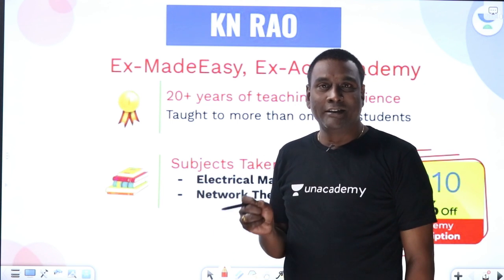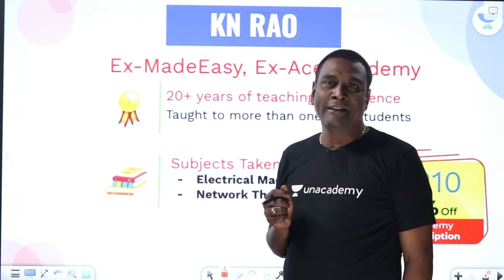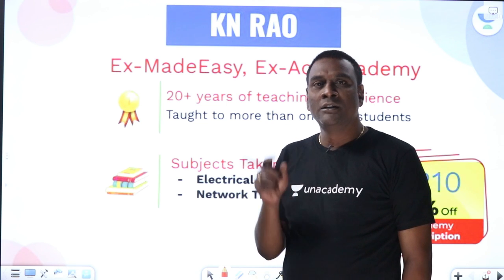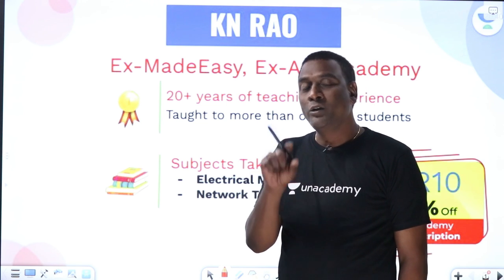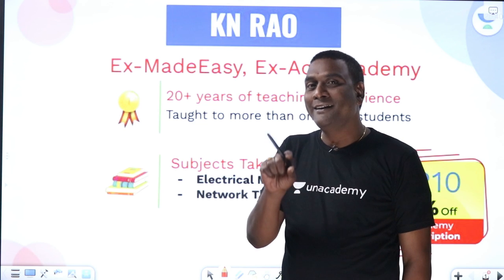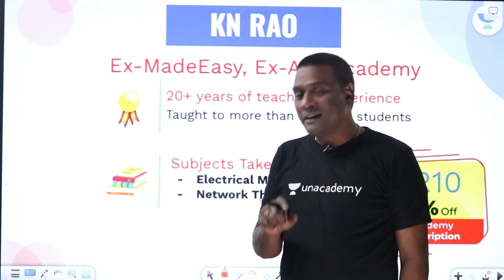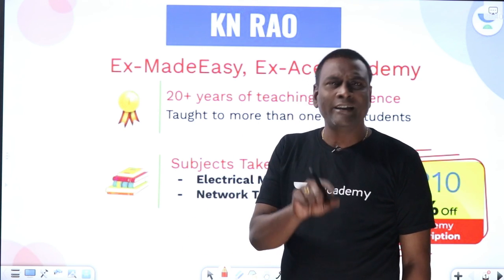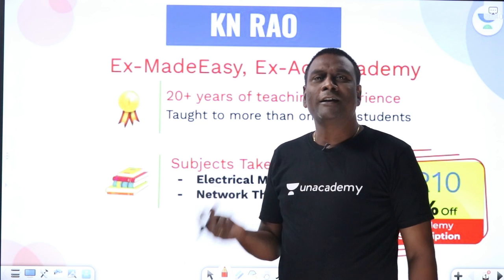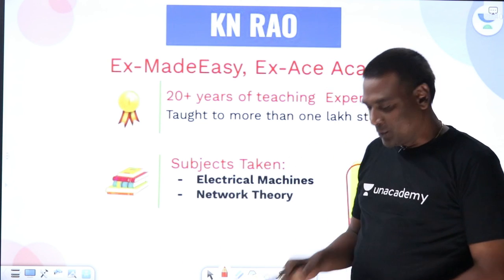The third point is: while killing or deactivating independent sources, a voltage source will be replaced with a short circuit, and a current source will be deactivated and replaced with an open circuit. You will come to know why.